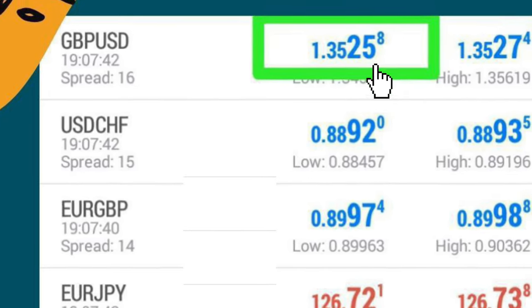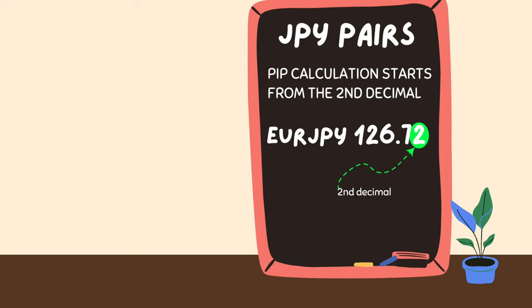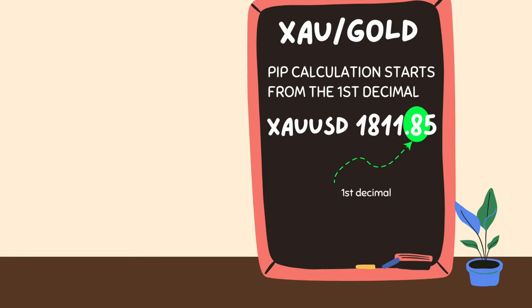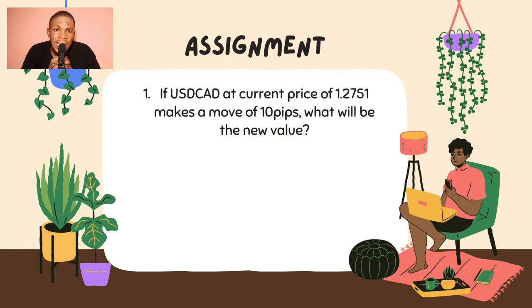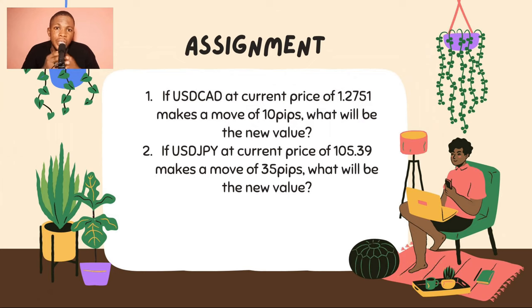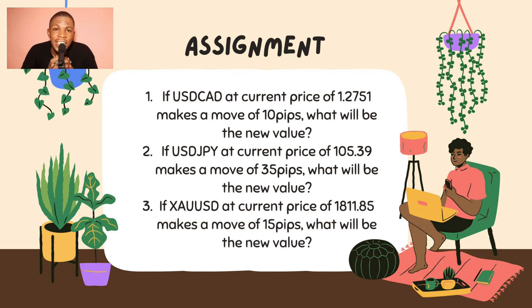So that you can all practice, here is a summary and some assignments. There are three cases: first, four decimal place pairs — pip starts at the fourth decimal; second, JPY pairs — pip starts at the second decimal; third, gold — pip calculation starts at the first decimal. Assignment 1: if USD/CAD at 1.2751 makes a move of 10 pips, what is the new value? Assignment 2: if USD/JPY at 105.89 makes a move of 35 pips, what is the new value? Assignment 3: if XAU/USD at 1811.85 makes a move of 15 pips, what is the new value? Drop your answers in the comment section.